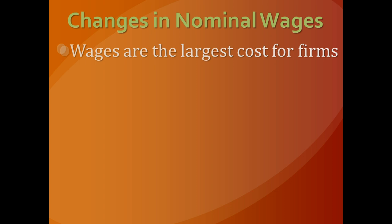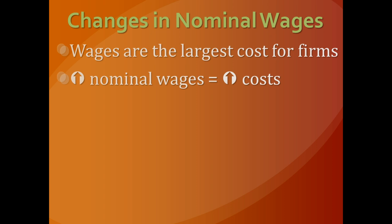When it comes to changes in nominal wages, because wages are the largest cost for firms, changes in those wages affect their short-run curve. If nominal wages rise, that increases costs to the producer and reduces profit per unit and their willingness to make things, so we would see a left shift in the aggregate supply curve. If wages were to fall, it would increase overall profit per unit for companies and they would shift their aggregate supply to the right.